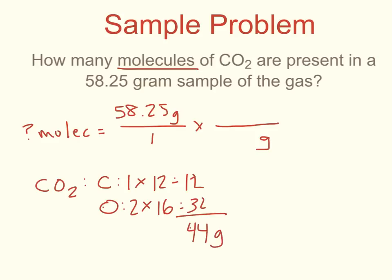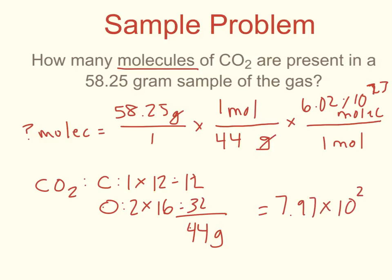So 44 will go on the bottom of my fraction. 44 grams is equal to 1 mole of carbon dioxide. Grams cancels, and I'm left with mole. But the problem doesn't ask me to solve for moles. It asks me to solve for molecules. So I need another conversion factor. 1 mole goes on the bottom. And to find molecules, I use Avogadro's number, or 6.02 times 10 to the 23rd molecules. To solve my problem, I'm going to take 58.25 divided by 44 times 6.02 times 10 to the 23rd, and I get 7.97 times 10 to the 23rd molecules.